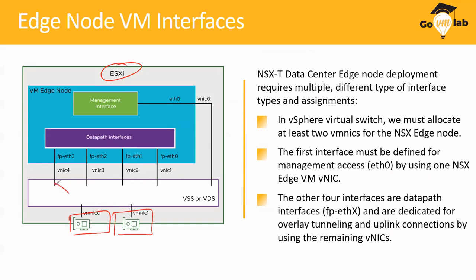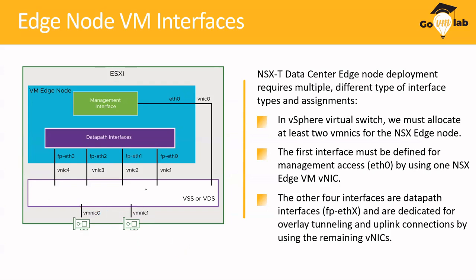These VNICs are mapped to the ESXi host uplinks to send packets outside the host. VNICs cannot directly send packets to the external network, so we leverage ESXi host uplinks — this is the whole concept of uplink profile we discussed. These uplinks carry the traffic and forward it to the external VLAN-backed network. We use a distributed switch (VDS) to connect these VNICs.